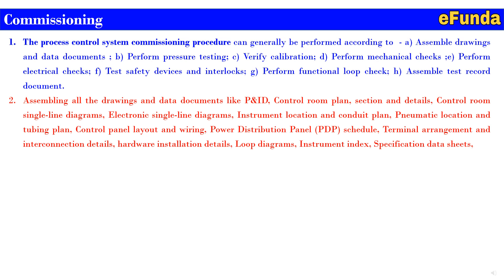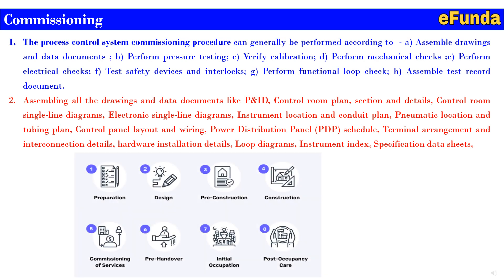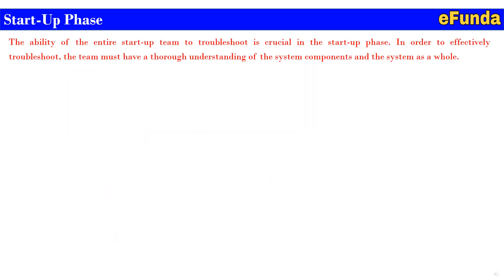Assembling all drawings and data documents includes: P&ID, control room plan, section and details, control room single line diagram, electronic single line diagram, instrument location and conduit plan, pneumatic location and tubing plan, control panel layout and wiring, power distribution panel (PDP) schedule, terminal arrangement and interconnection details, hardware installation details, loop diagrams, instrument index, and specification data sheets. One can refer to the figure showing preparation, design, pre-construction, construction, commissioning of services, pre-handover, initial occupation, and post-occupancy care as steps followed during commissioning.